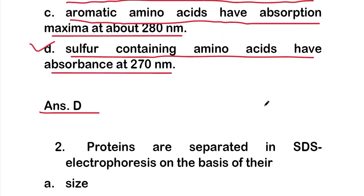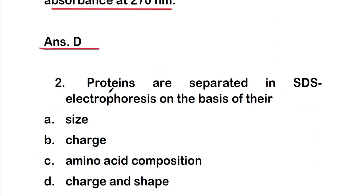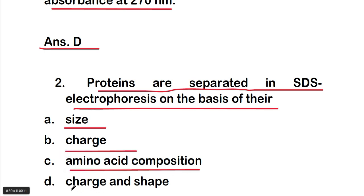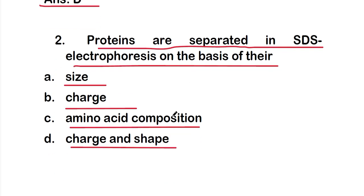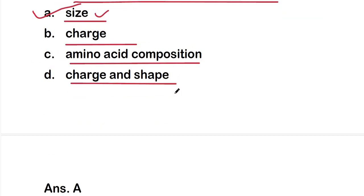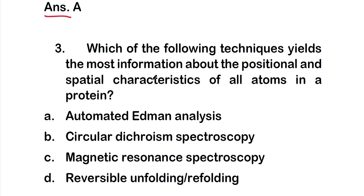Question 2: Proteins are separated in SDS electrophoresis on the basis of their — A) size, B) charge, C) amino acid composition, or D) charge and shape. The right answer is option A: proteins are separated in SDS electrophoresis on the basis of their size.